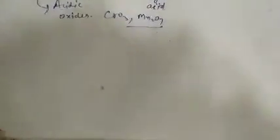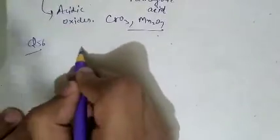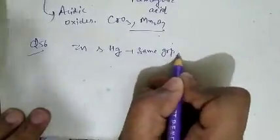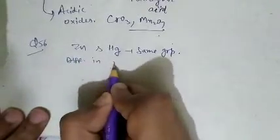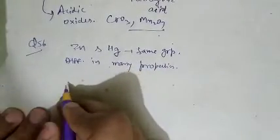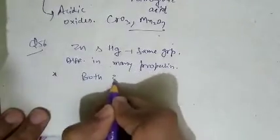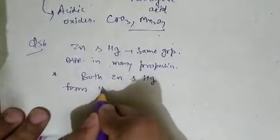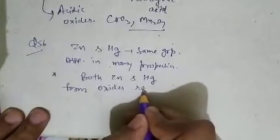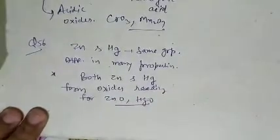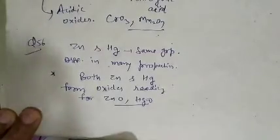Question number 56: zinc and mercury belong to the same group but differ in many properties. The property shared by both is that zinc and mercury both readily form oxides — for example, zinc oxide and mercury oxide. This property is common for both. Question number 56, option is correct.